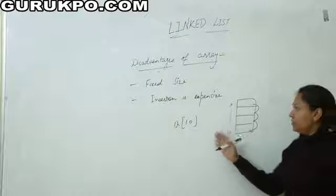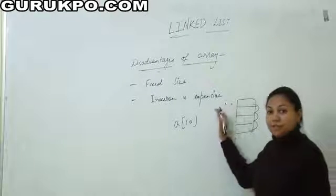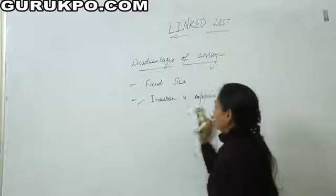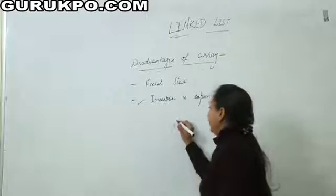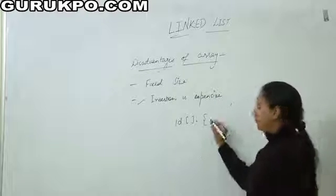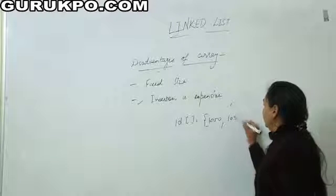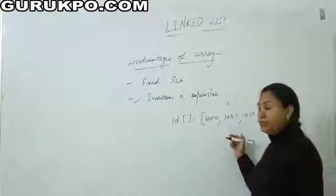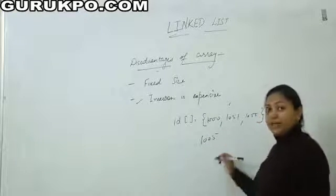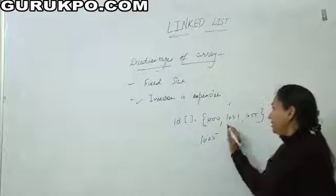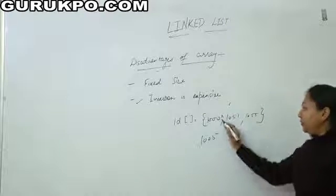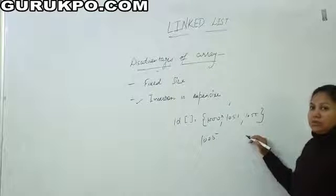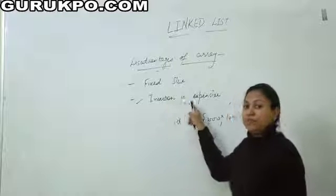The next problem with array is insertion. If I want to insert a new element, that is very expensive with array. Suppose we have an array of IDs, array name is ID, in which we store the IDs of 3 students. If I want to insert a new element whose ID is 1005 and I want the IDs stored in sorted order, I have to shift all these two elements downside to make room. That will take too much time, which is why insertion in case of array is very expensive.